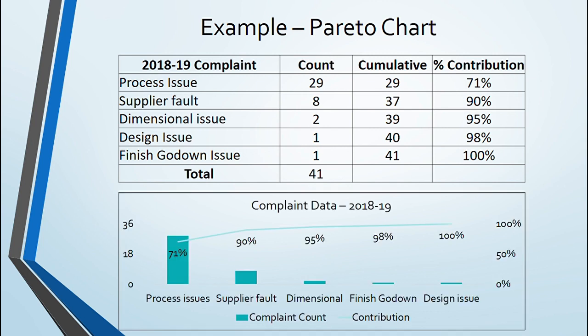You will start to see that few troubles or few categories are contributing to majority of complaints. Finally, you create a bar-line chart. Count of defect as bar and percentage contribution as line. Result is that 90% of defects are due to two categories.